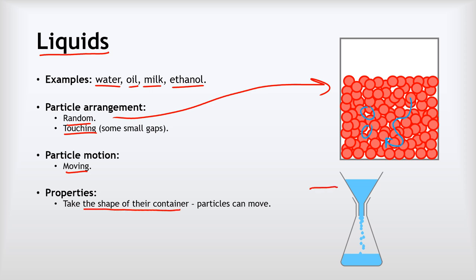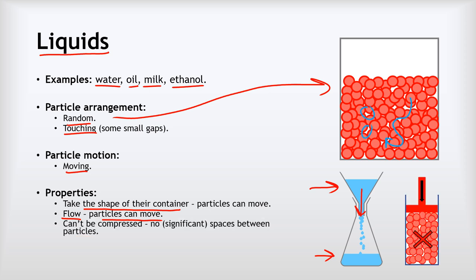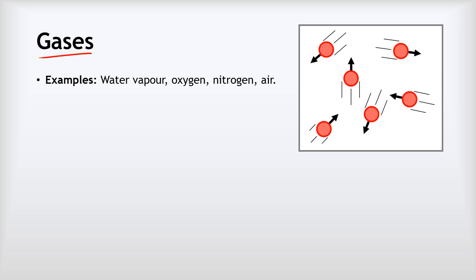Liquids take the shape of their container — so the water in a funnel is funnel-shaped, whilst the water in a flask is flask-shaped. Liquids can also flow, because the particles are able to move — very different to a solid. Lastly, liquids can't be compressed, because there are no spaces in between the particles.